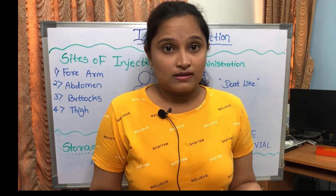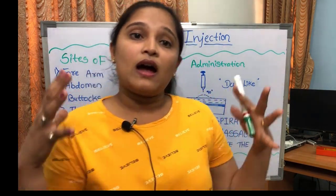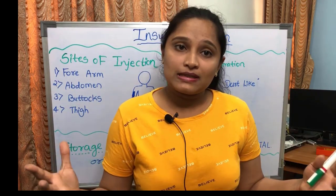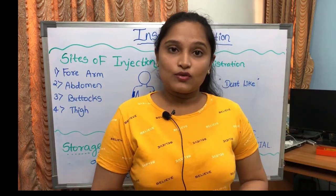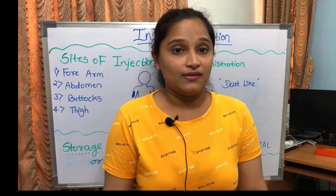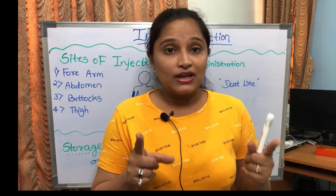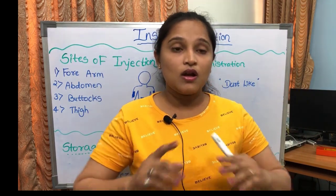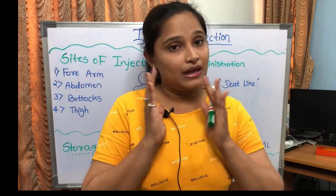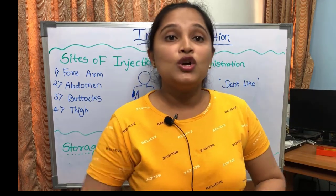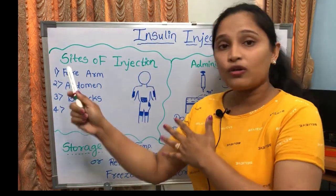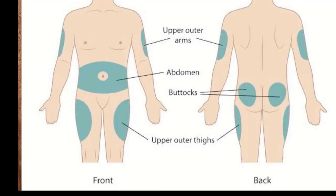Where will we give injections? Insulin injections are given subcutaneously. Unless it is an emergency such as diabetic ketoacidosis, we cannot give it IV. The only insulin we can give IV is regular insulin — no other insulin can be given IV. The sites for insulin injection are the forearm, abdomen, buttocks, or thigh.